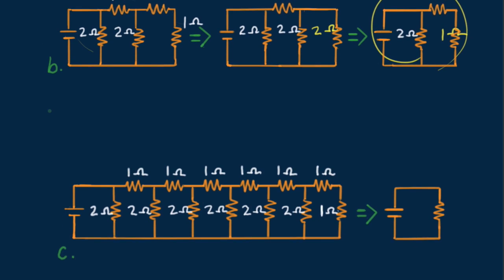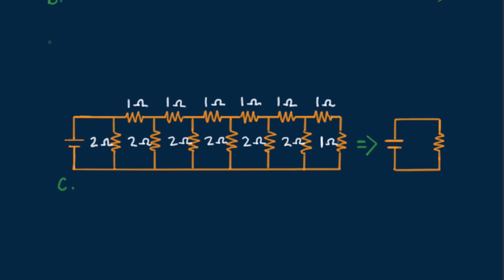Now I want to leave you with this granddaddy circuit C. Suppose the battery is 6 volts. How much current is drawn by the battery? How much current is in the first 2 ohm resistor? And how much current is in the first 1 ohm resistor? Got it? I hope so!